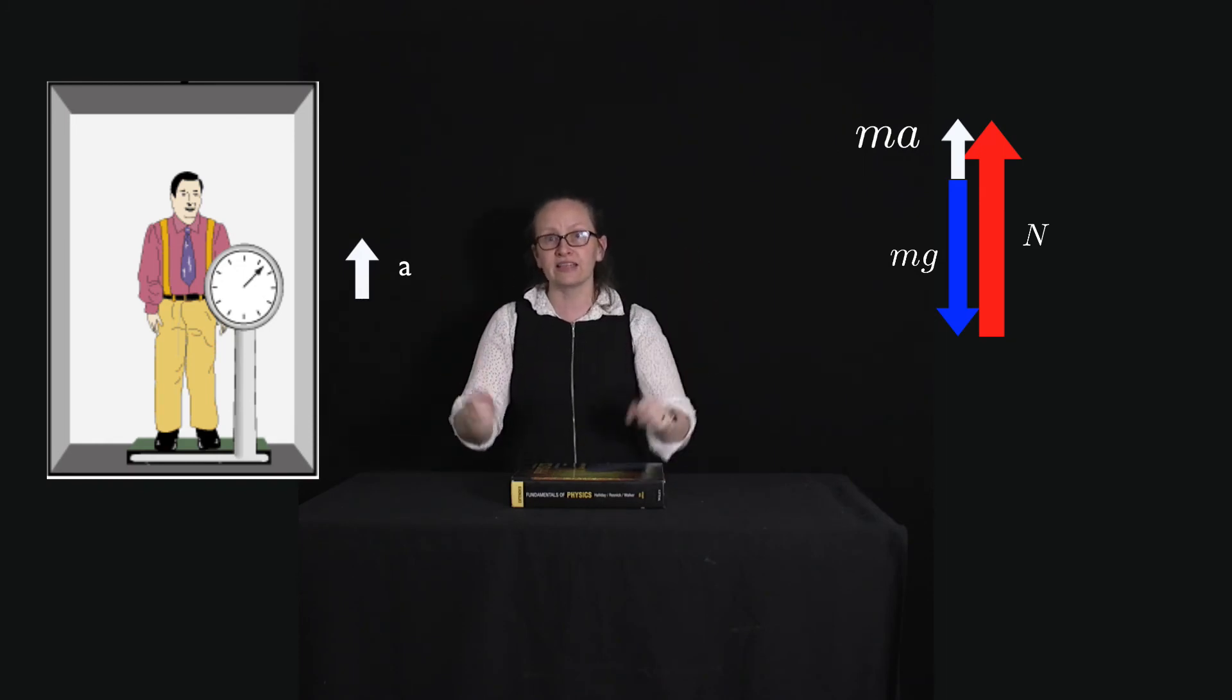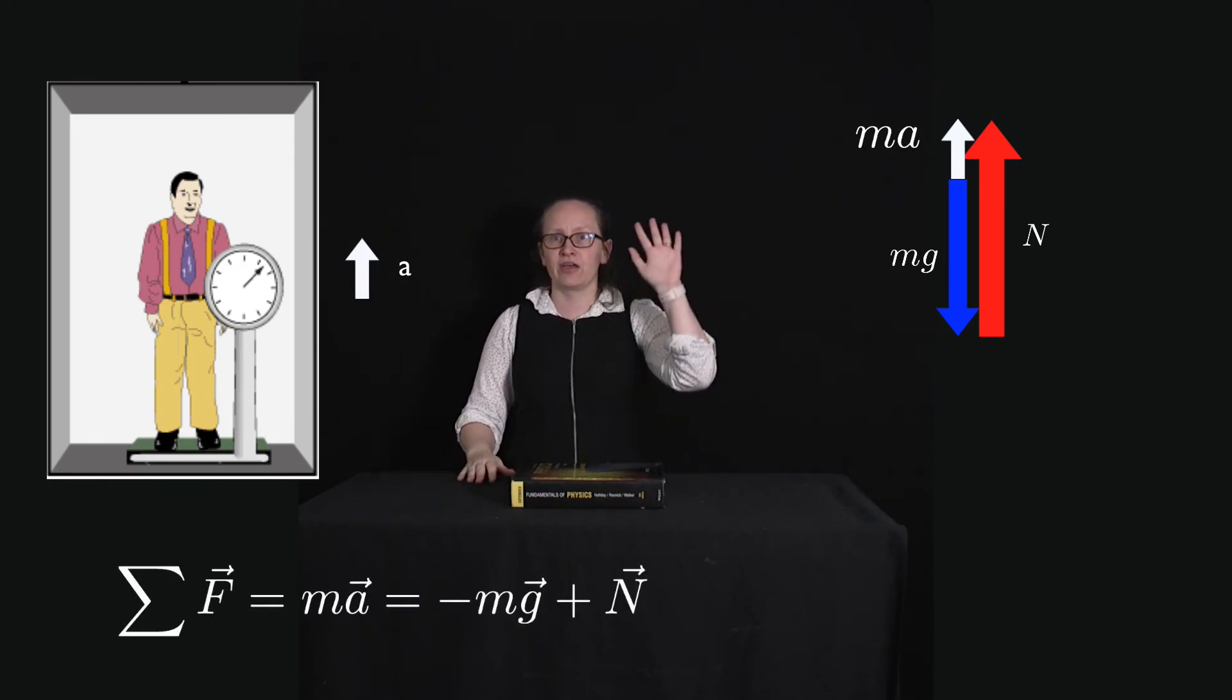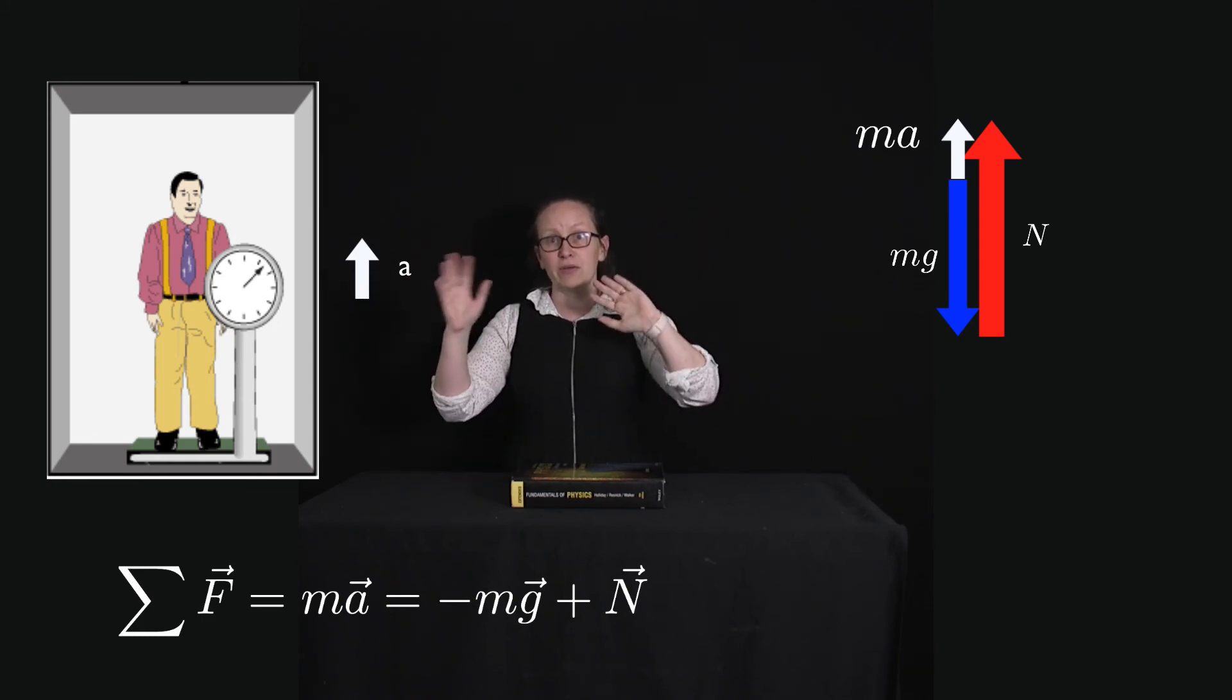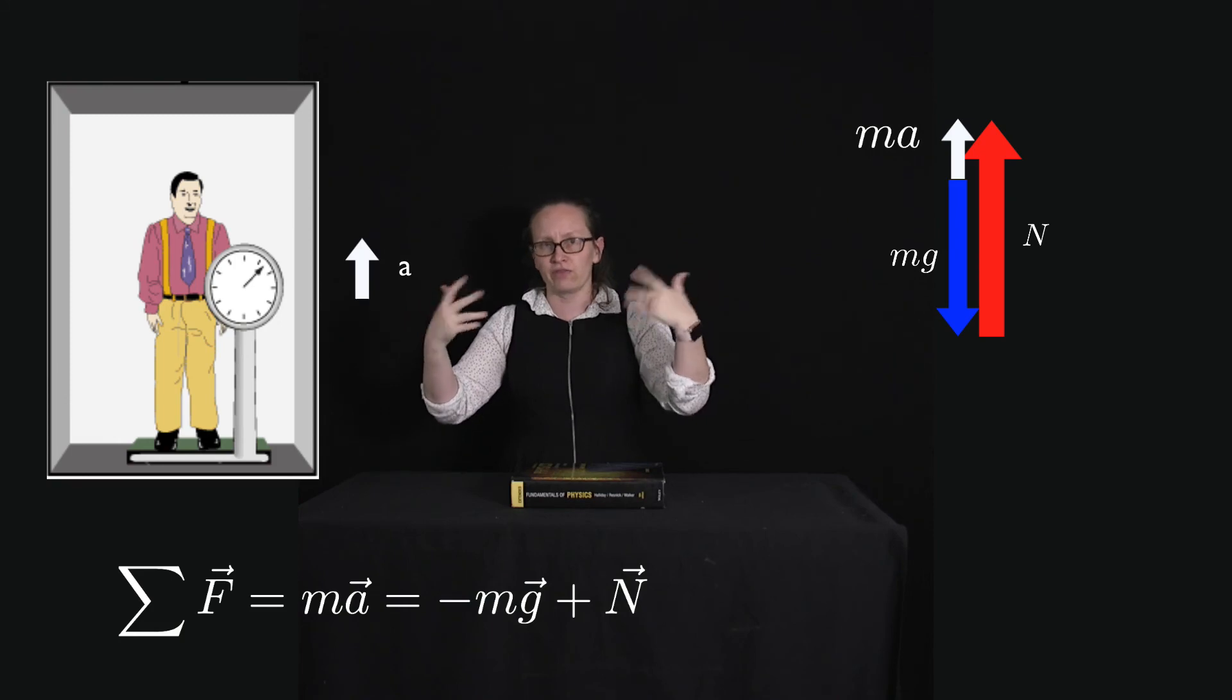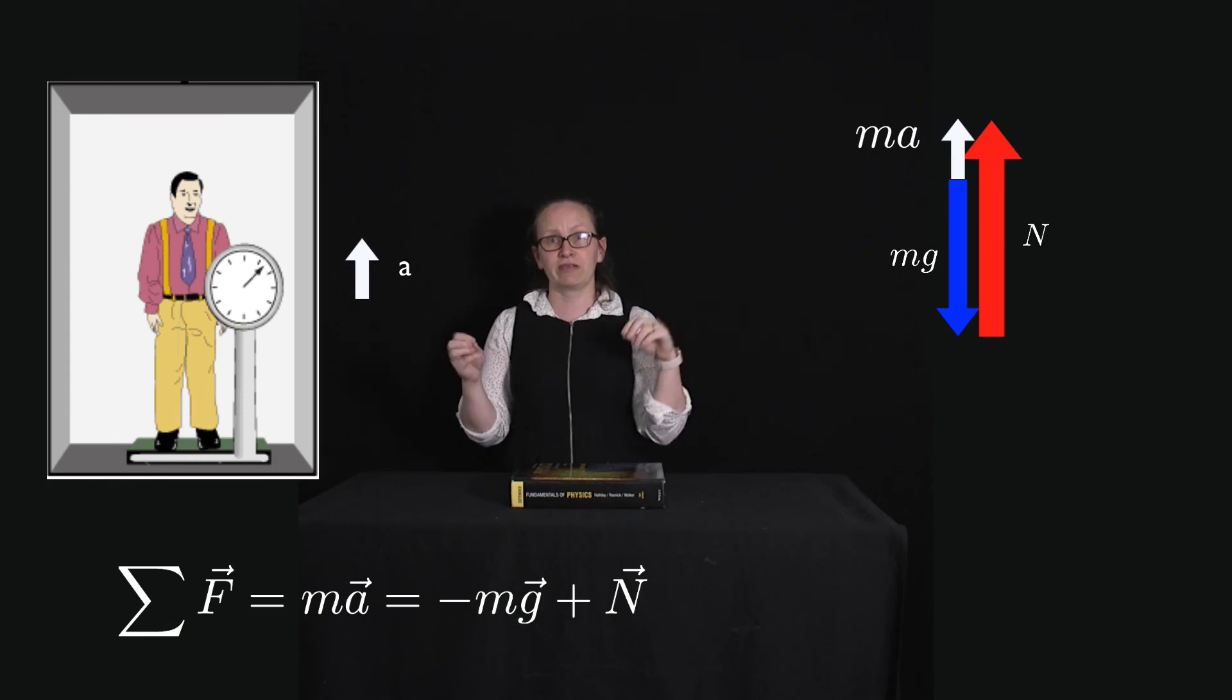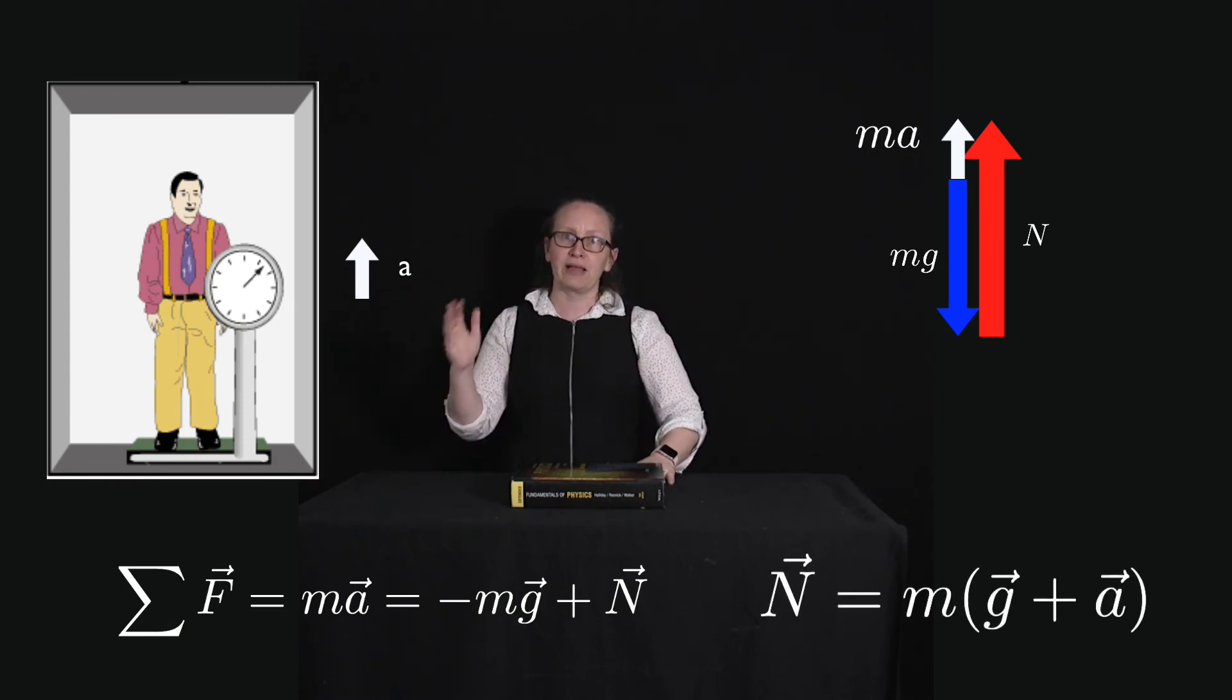In this case we have that the net force is equal to ma and ma is now positive. And the forces acting on the person are still -mg + N. Though it's a different N. So now we can rearrange this case and we get N is equal to mg plus ma.